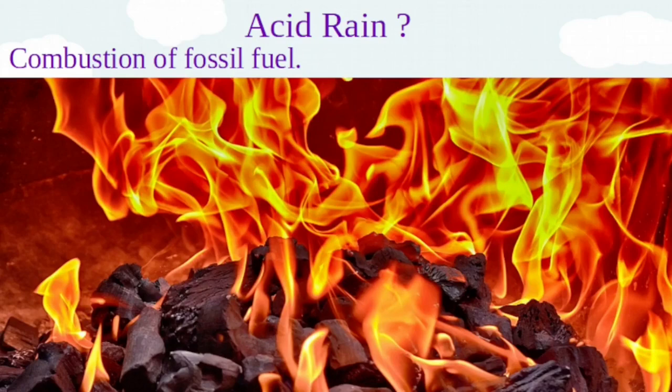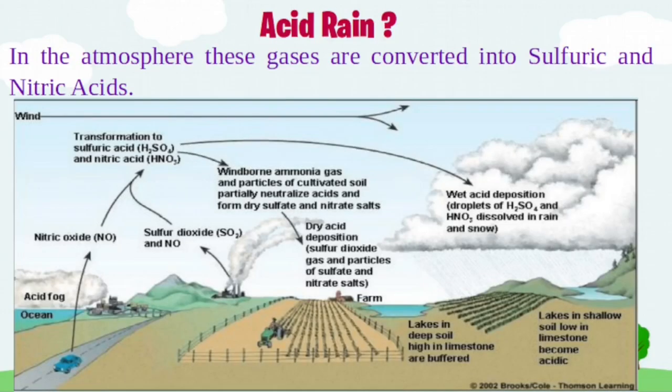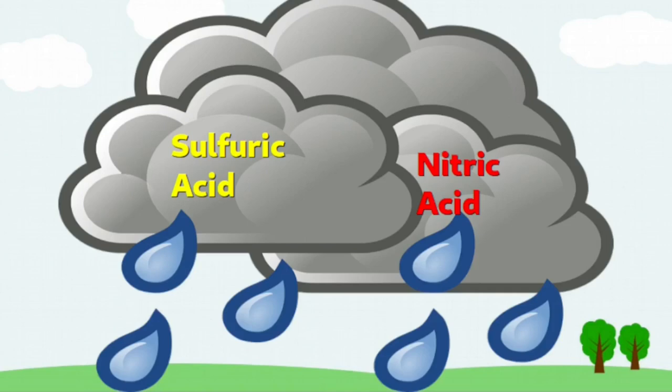Acid-forming gases are oxidized over several days, by which time they travel several thousands of kilometers. In the atmosphere, these gases are ultimately converted into sulphuric and nitric acids. These acids cause acidic rain.